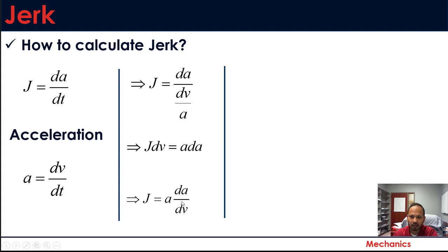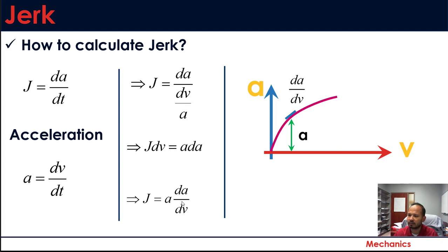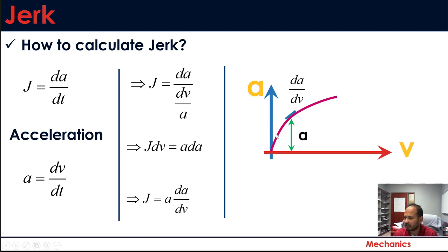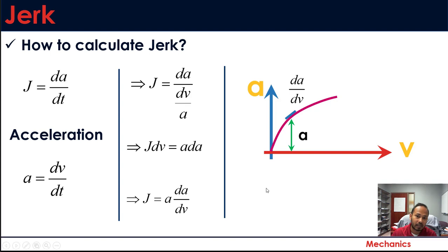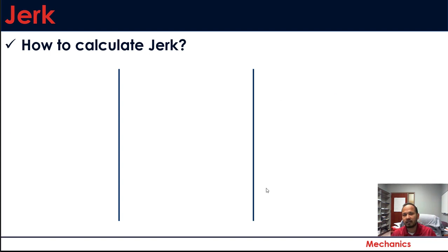Graphically, if you want to calculate jerk and you know your acceleration-time (a-t) curve and your velocity-time (v-t) curve, you can plot acceleration versus velocity. The slope of that curve is da/dv. At any point on that curve, the slope gives da/dv and the y-value gives a, so you can plug into j = a·(da/dv) to calculate jerk graphically.